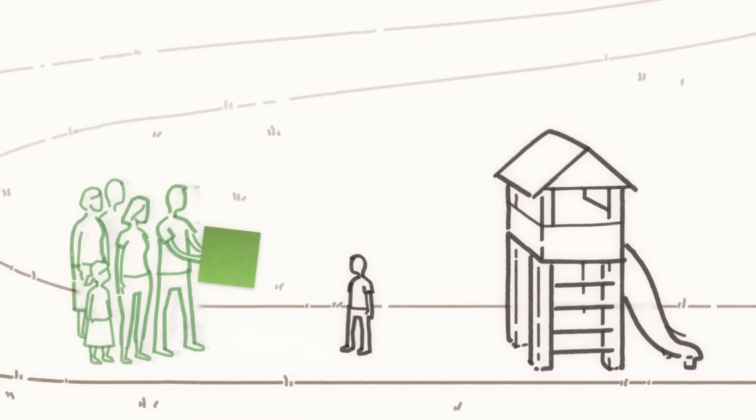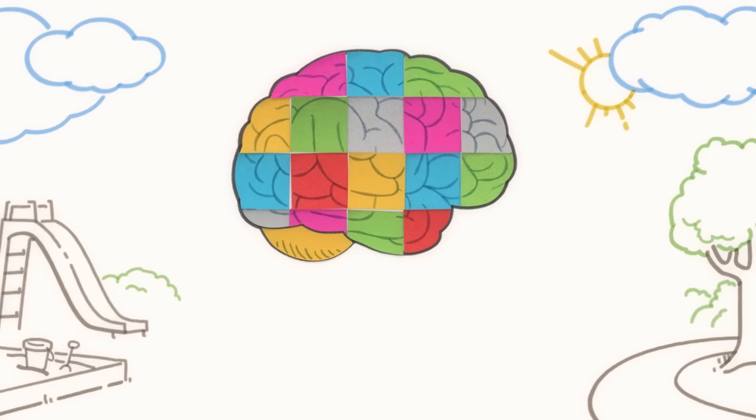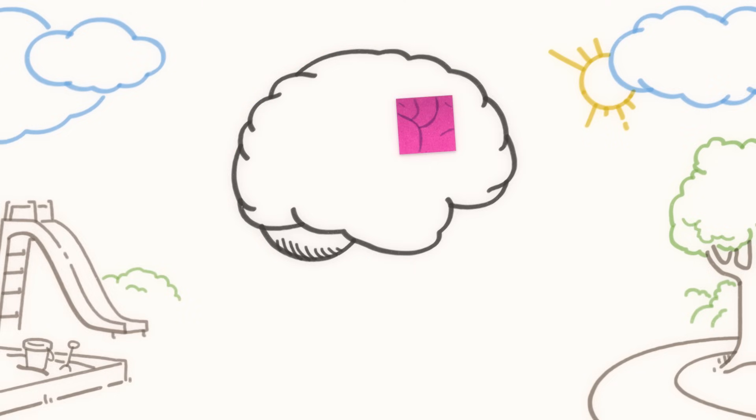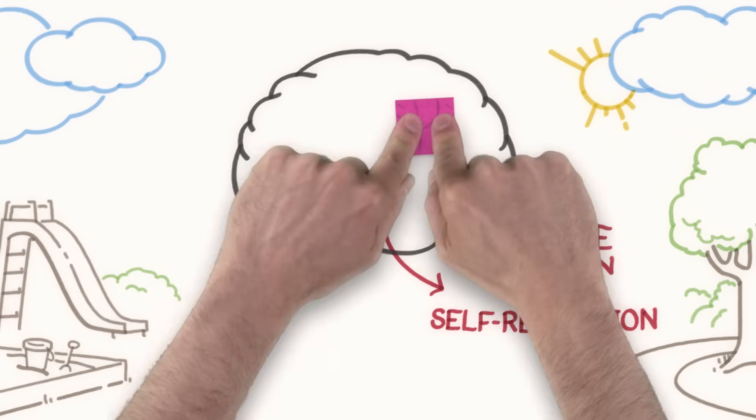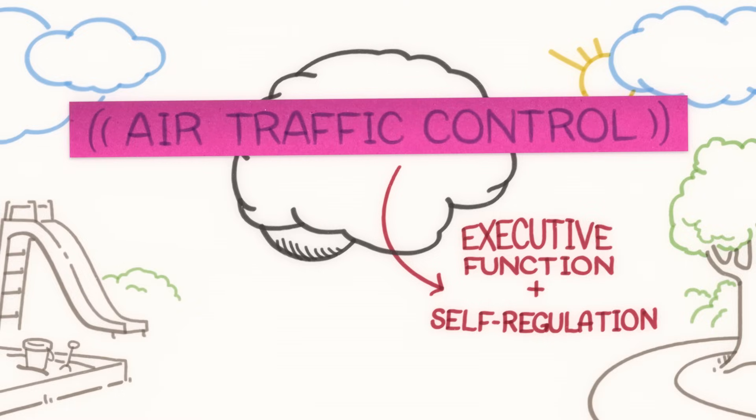One of the things that sturdy brain architecture supports is the development of basic emotional and social skills. An important group of skills which scientists call executive function and self-regulation can be thought of like air traffic control in the child's mental airspace.